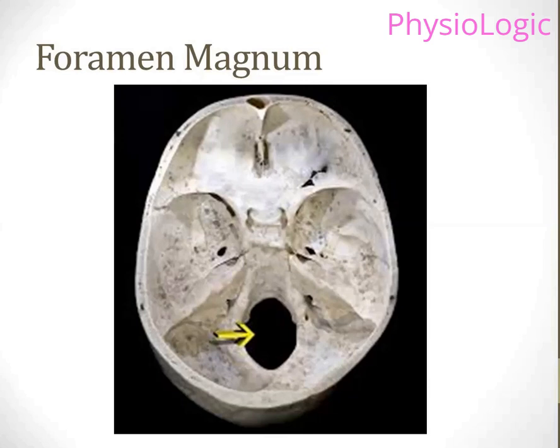Is the brain stem already part of the spinal cord or is it still part of the encephalon — the brain? The brain stem terminates at the foramen magnum; beneath the foramen magnum is your spinal cord. So the foramen magnum is the key point to remember: that is where the brain terminates. The brain stem is part of the brain. The brain terminates and the spinal cord starts, and the foramen magnum is the structure from where the spinal cord passes.